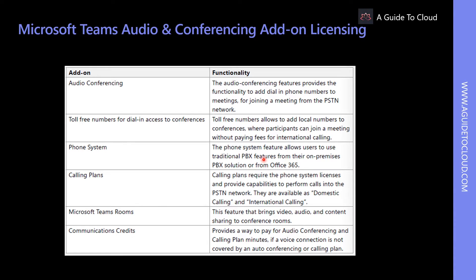For audio conferencing, an organization will need to buy and assign an audio conferencing license to each user who will set up dial-in meetings. For calling plans, each user will need a phone system plus a domestic or domestic and international calling plan. This table lists the add-on licenses available for Teams.